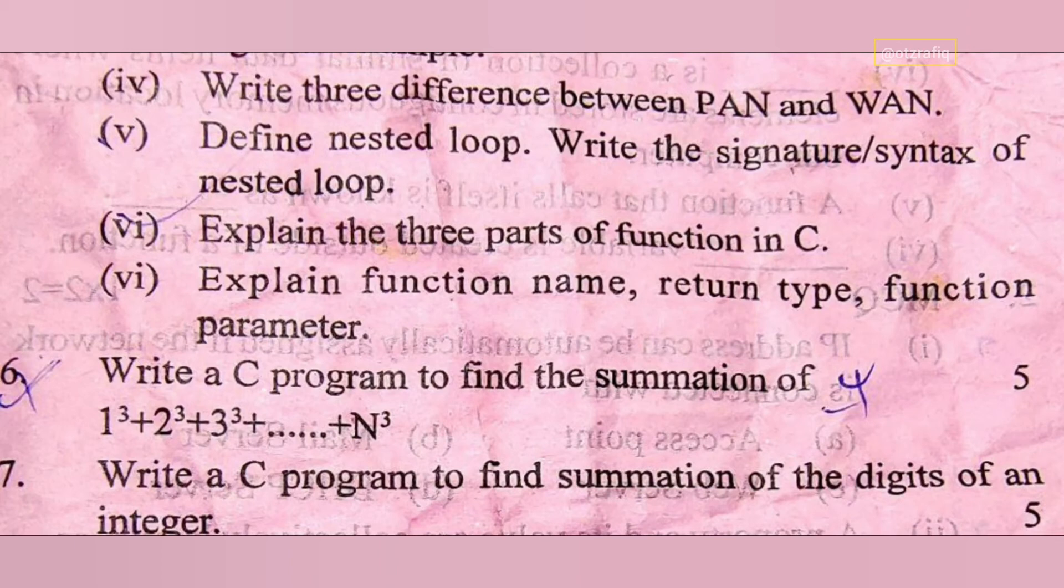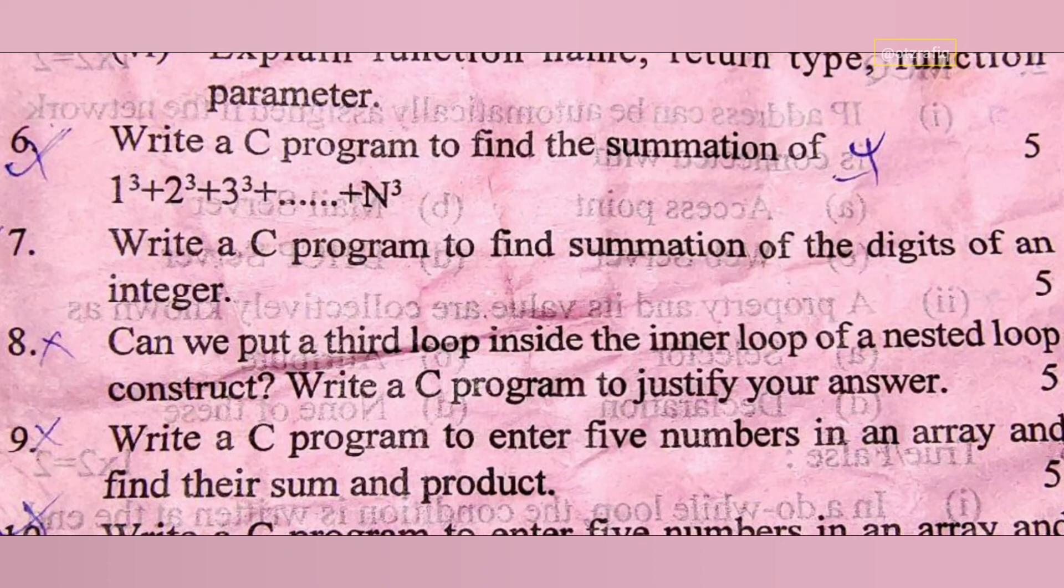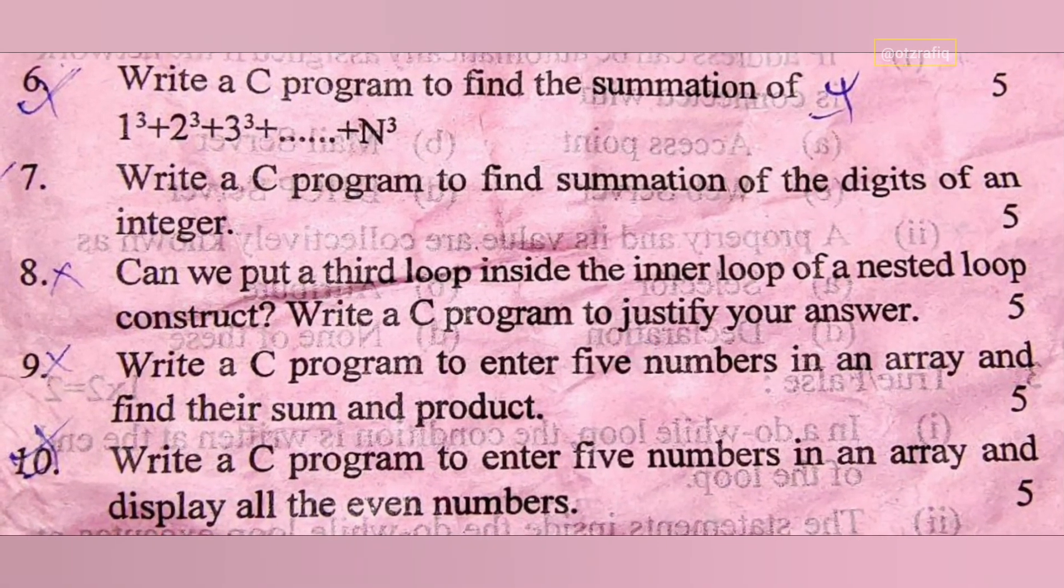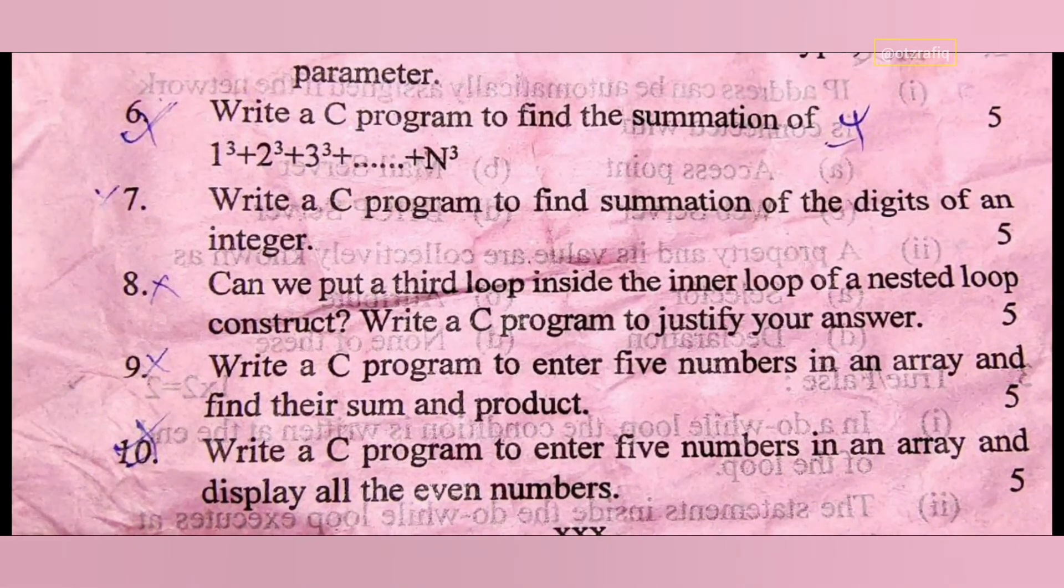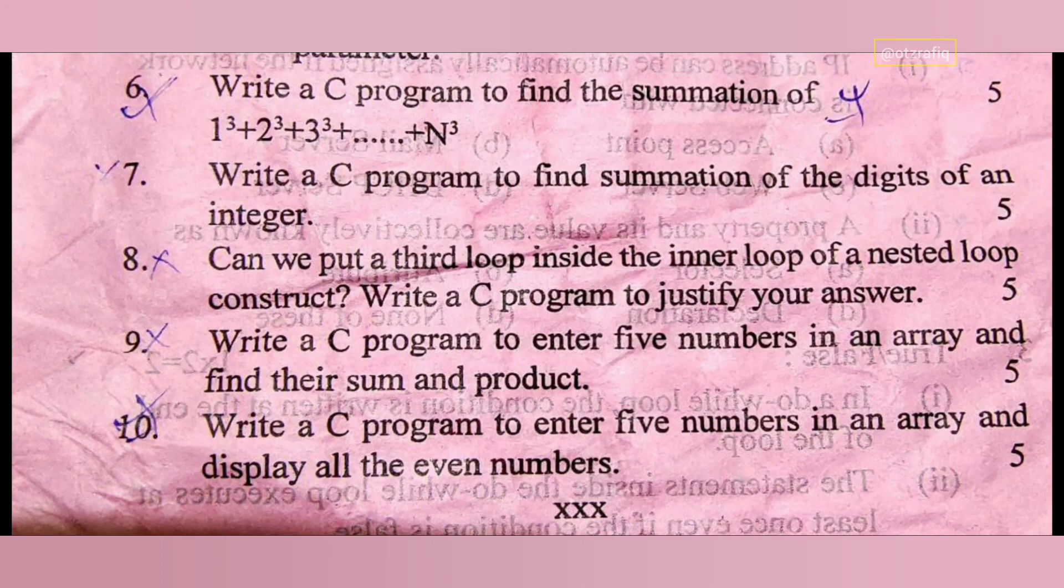Write a C program to find the summation of 1³+2³+3³+...+N³. This is by using loop, it is easy. If you want the programming answers you can write in comment section, I'll give the programs. Number seven: write a C program to find the summation of digits of an integer - it's already in book, directly given from the explanation. Can we put third loop inside - it is from exercise. Write a C program to enter five numbers in an array and find their product. And the last one: write a C program to enter five numbers in an array and display all the even numbers. Numbers nine and ten, they are almost same, just we have to change it.